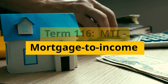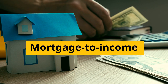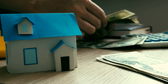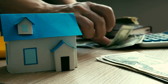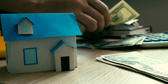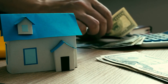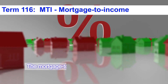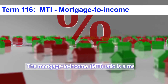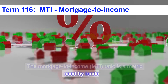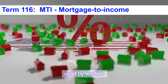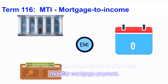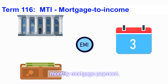Term 116: MTI – Mortgage to Income. The Mortgage to Income (MTI) Ratio is a metric used by lenders to assess a borrower's ability to afford their monthly mortgage payment.